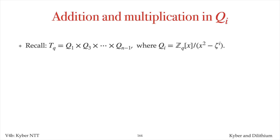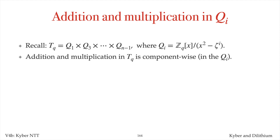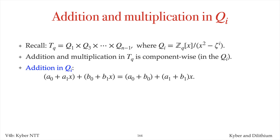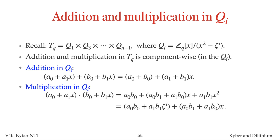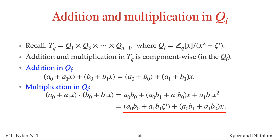Recall that Tq is a product of n/2 quadratic rings, where qi is a ring of quadratic polynomials over Zq, modulo x squared minus zeta to the i. Addition and multiplication in Tq are performed component-wise. The addition of the i-th components in two vectors in Tq is a0 plus b0 plus a1 times b1 times x. The multiplication of the i-th components a0 plus a1·x and b0 plus b1·x yields a quadratic polynomial, which upon replacing x squared by zeta to the i gives a polynomial of degree at most 1.